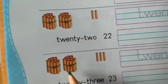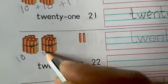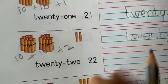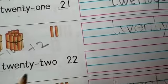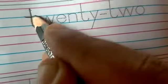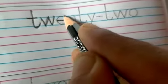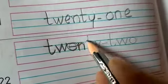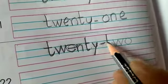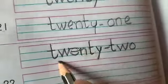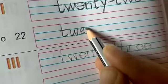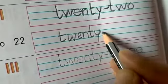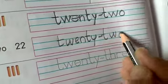Next: here also 2 tens bundles are there, 1 and 2, and 2 extra. So it becomes 22. Spell: T, W, E, N, T, Y, T, W, O — 22. First trace the letters, then rewrite in the below column.